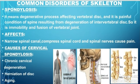Spondylosis mainly affects the spinal cord by narrowing the spinal canal and compressing the spinal cord, increasing pressure which causes pain. The main causes of cervical spondylosis — where 'cervical' refers to the neck vertebrae — are: number one, chronic cervical degeneration; number two, herniation of disc; and number three, aging. Among these, the main cause is aging, as it is a degenerative process. In the diagram you can see symptoms of cervical spondylosis and how the herniated intervertebral disc causes spinal cord compression.